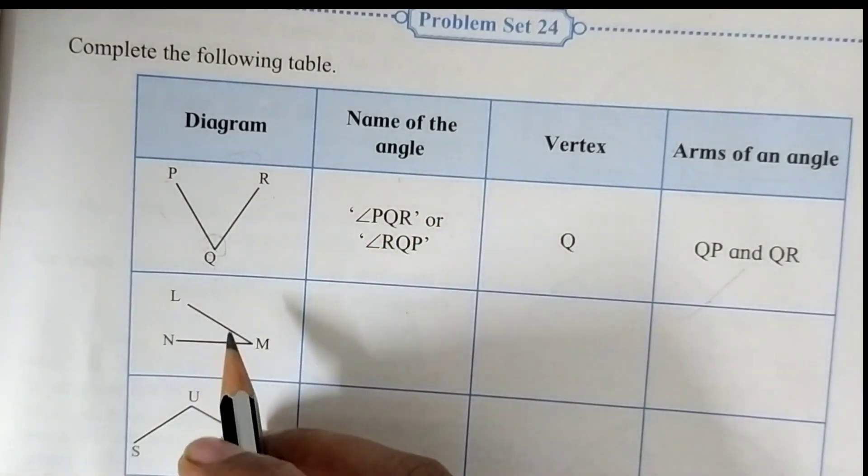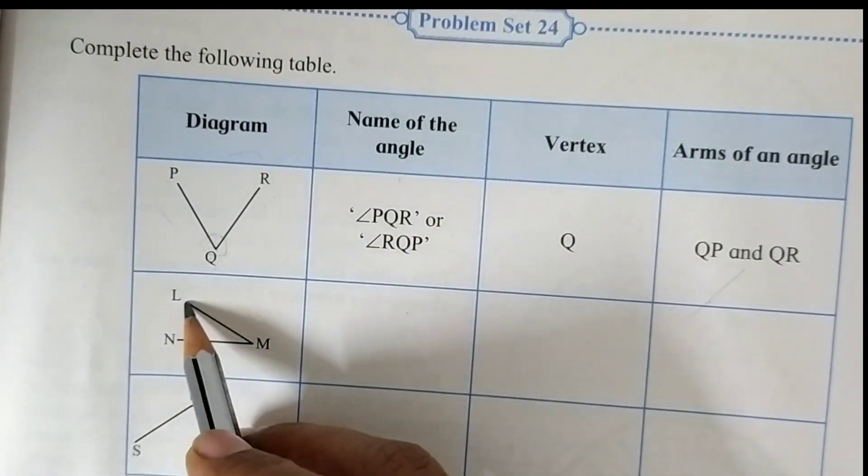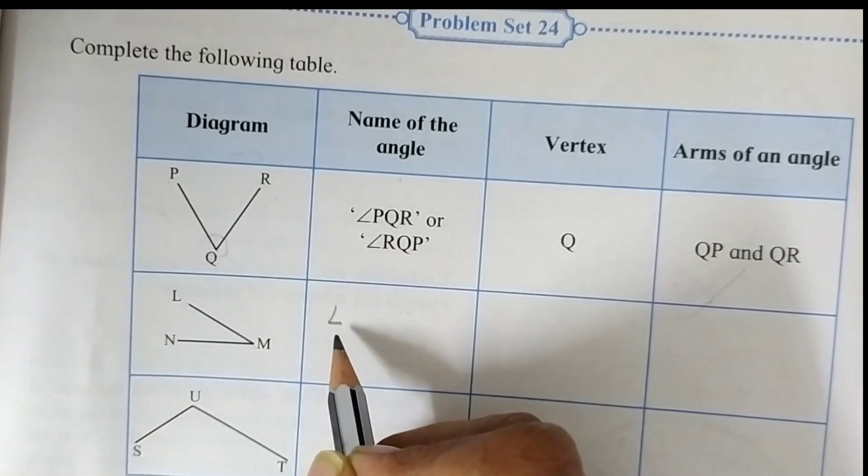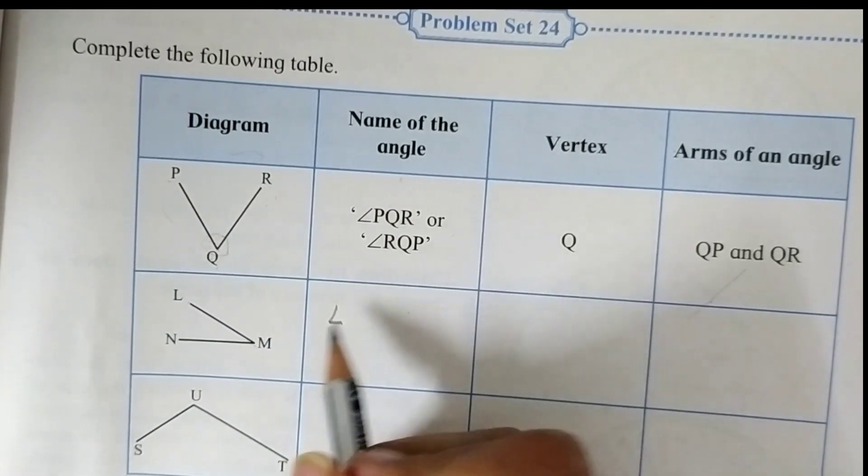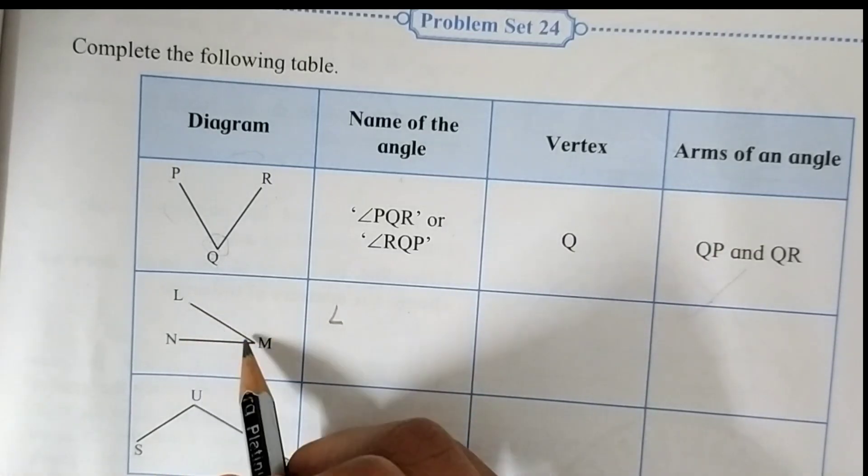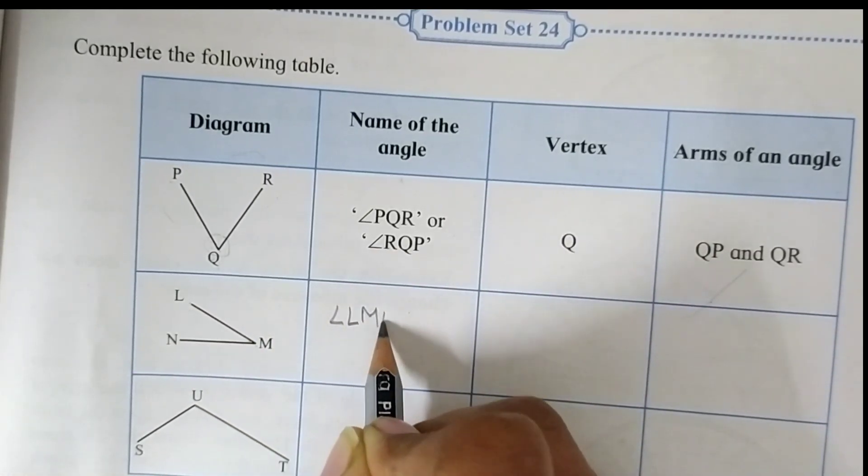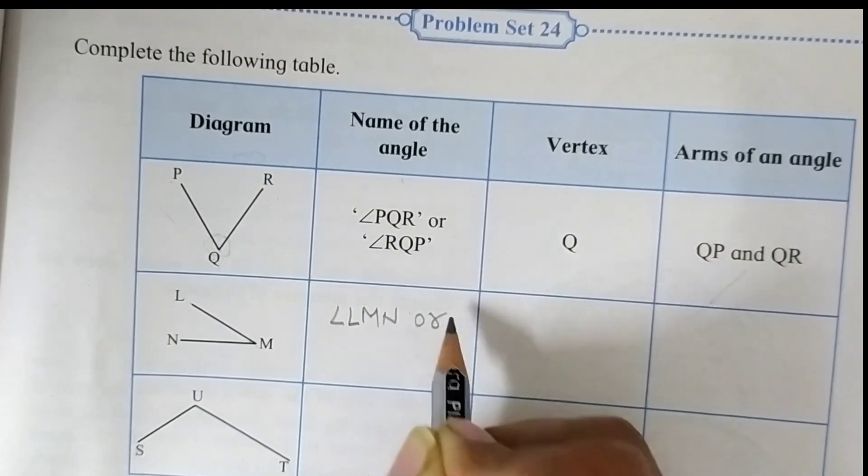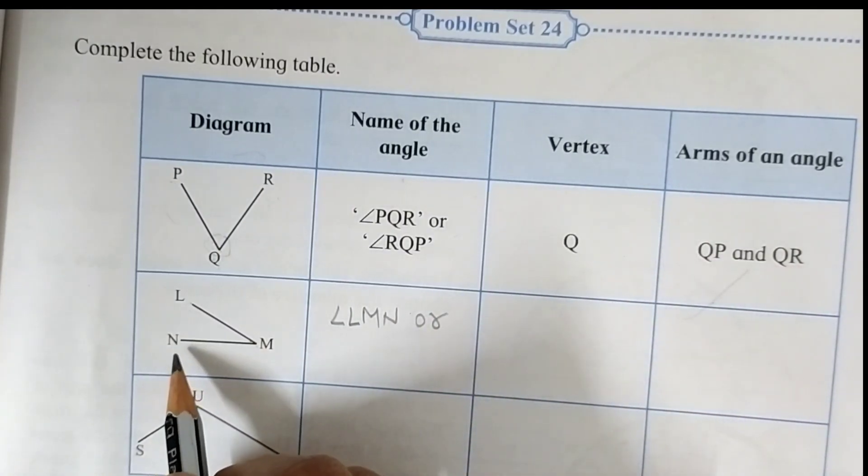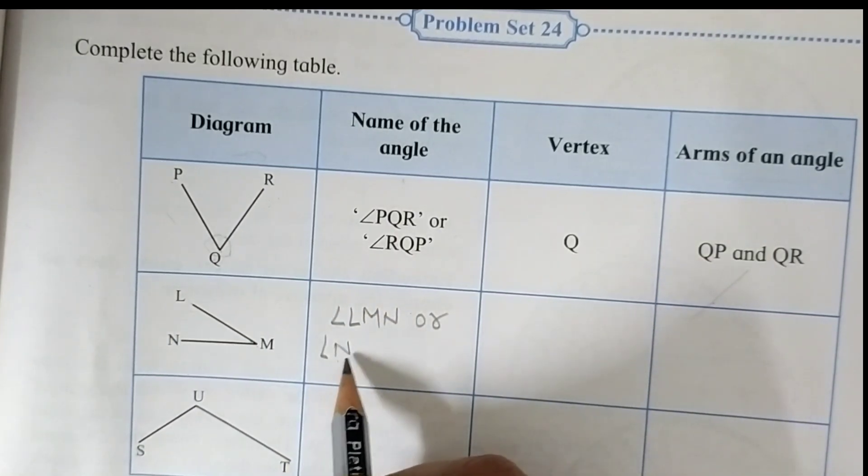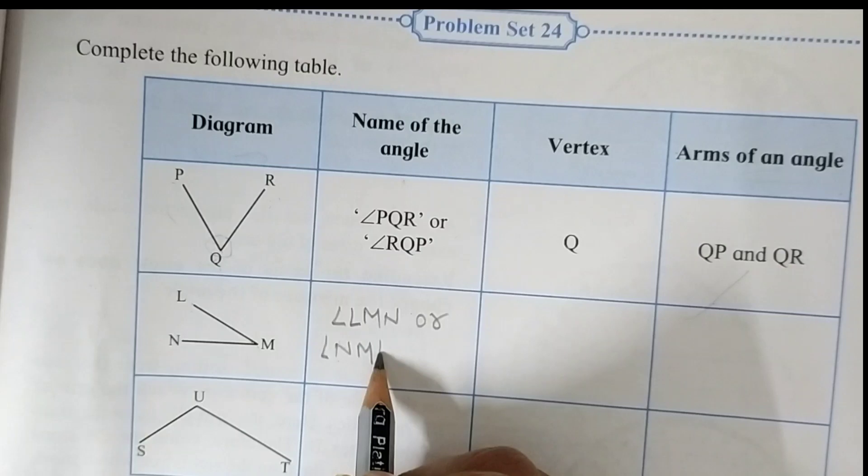Name of the angle is angle LMN. This is the symbol of an angle. I told about it in my last video. Angle LMN or we can write it as angle NML.